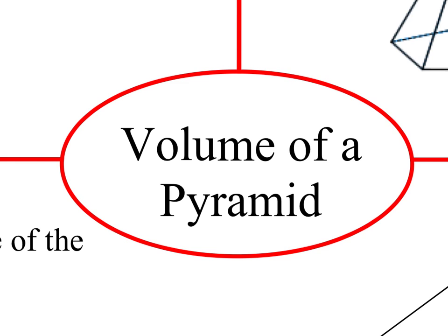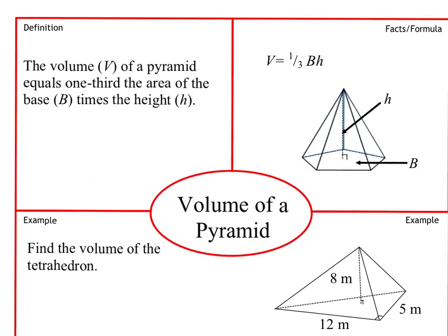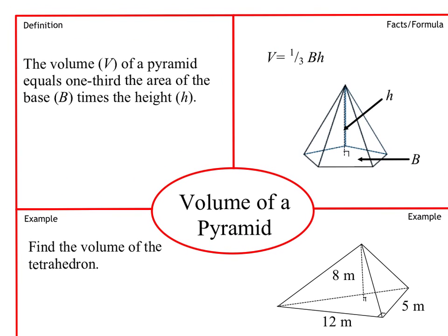Volume of a pyramid, very similar to volume of a cone. The formula is essentially the same thing. It's going to be one-third the base times the height. And it depends on what your base is would determine what you're going to use as your formula.